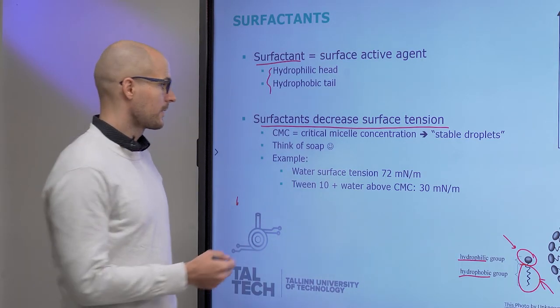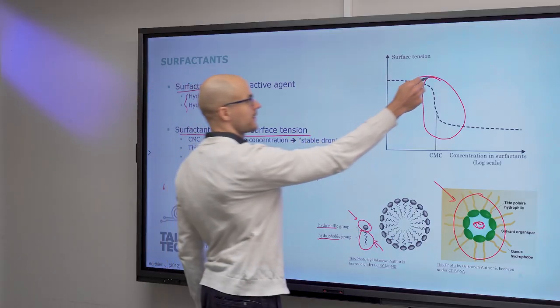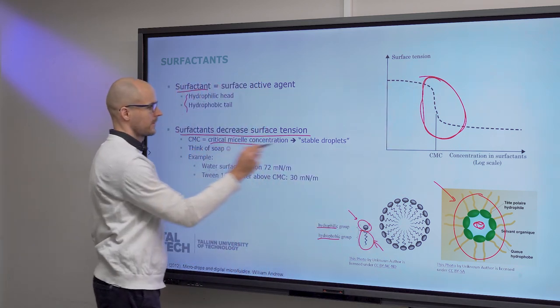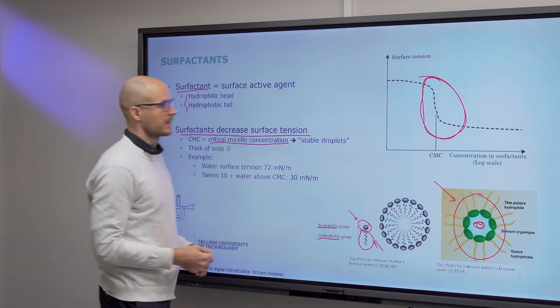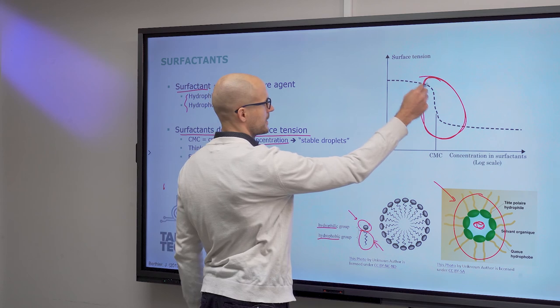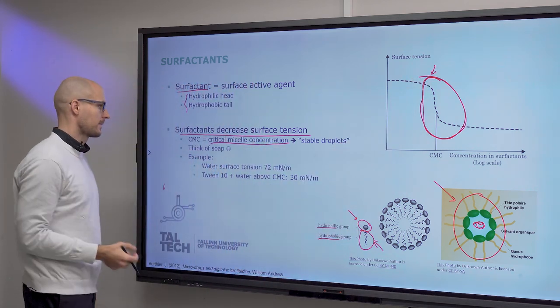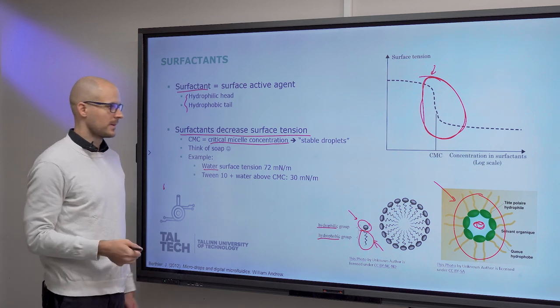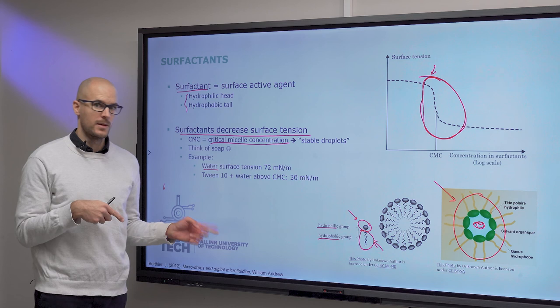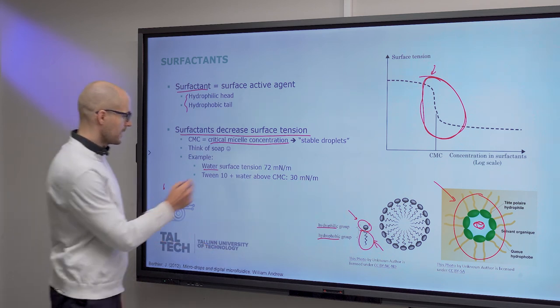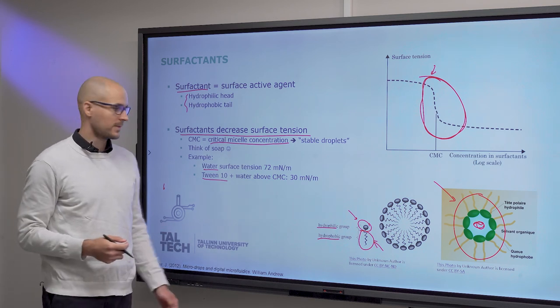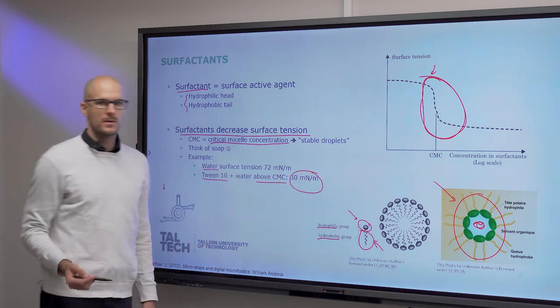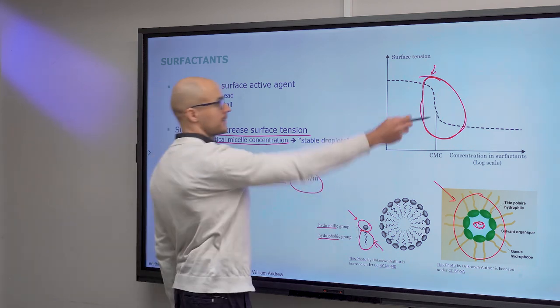What surfactants do is they decrease the surface tension. And what we intend to reach is a concentration of surfactants which is called the critical micelle concentration, where we can get stable droplets where the surface tension significantly drops. Beyond this concentration, at this concentration level. And for example, water by itself has a surface tension of 72 millinewtons per meter, which we had in the table in the previous slide. And if we add the surfactant called Tween 10, to be specific, then above the critical micelle concentration, surface tension becomes 30 millinewtons per meter. So that's this significant drop.